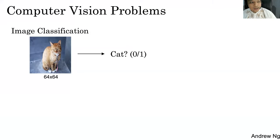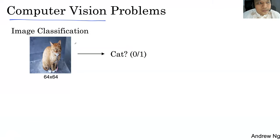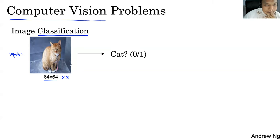Convolutional Neural Network itu sangat dimotivasi, sangat banyak terinspirasi dari computer vision problem. Ini banyak sekali diimplementasikan dalam vision problem. Bisa dalam sebuah classification — misalkan inputnya adalah sebuah image 64x64, resolusinya kalau dia warna dikali 3. Outputnya adalah prediksi apakah ini kucing atau bukan. Itu adalah image classification.